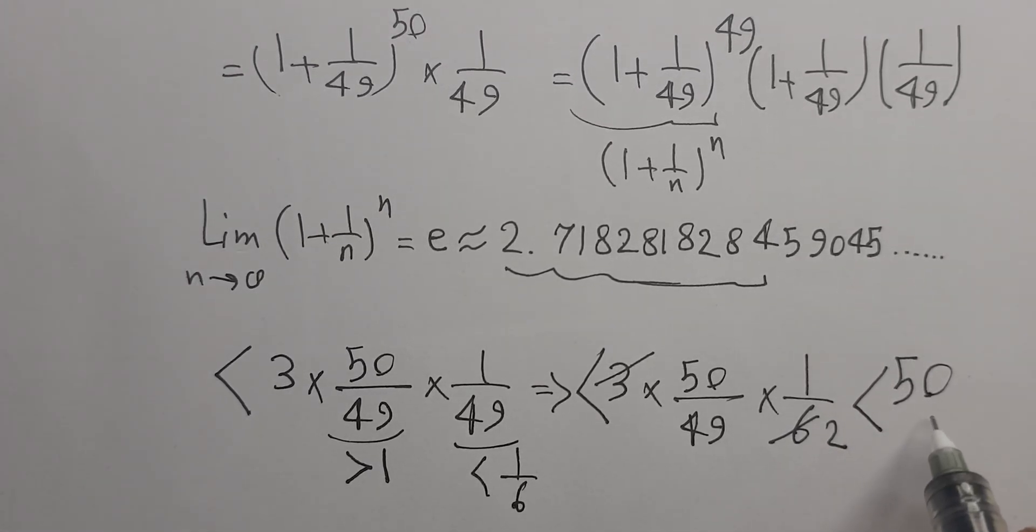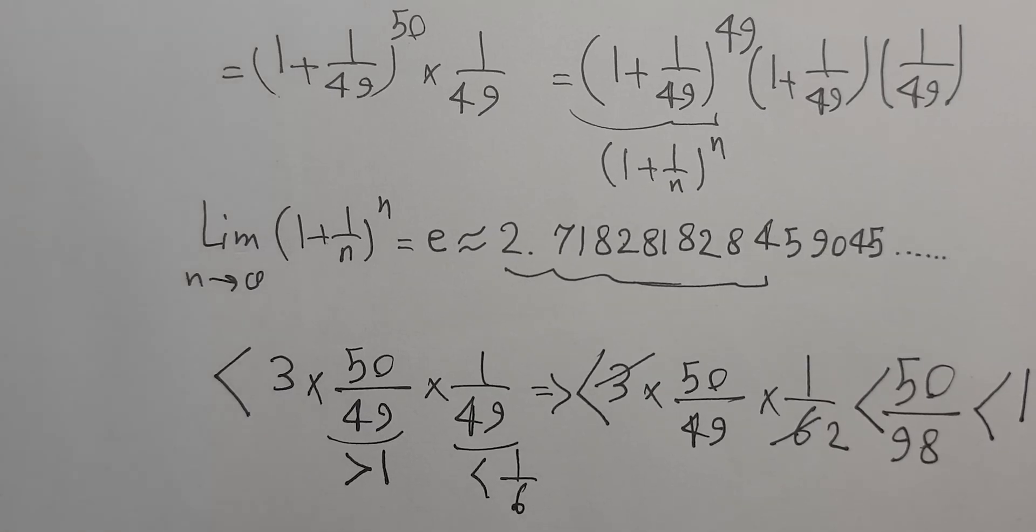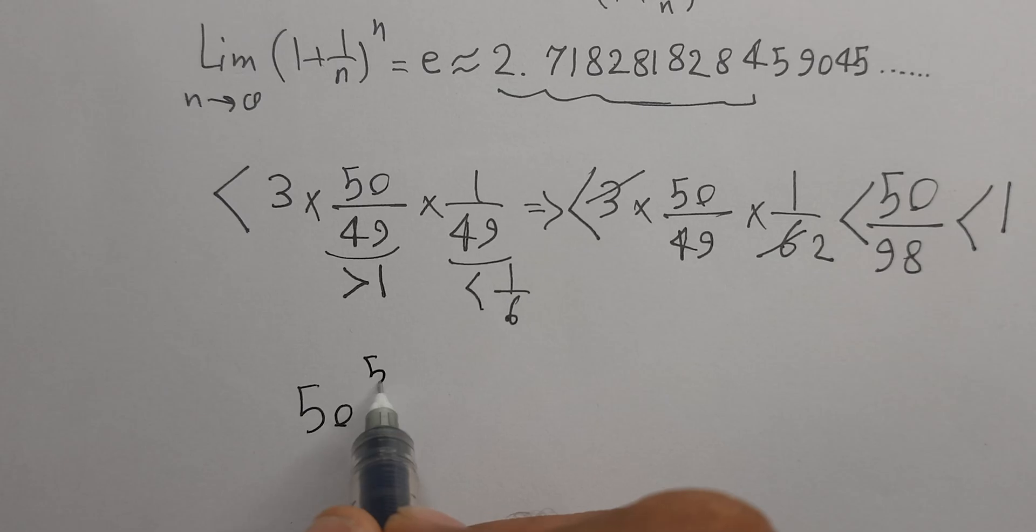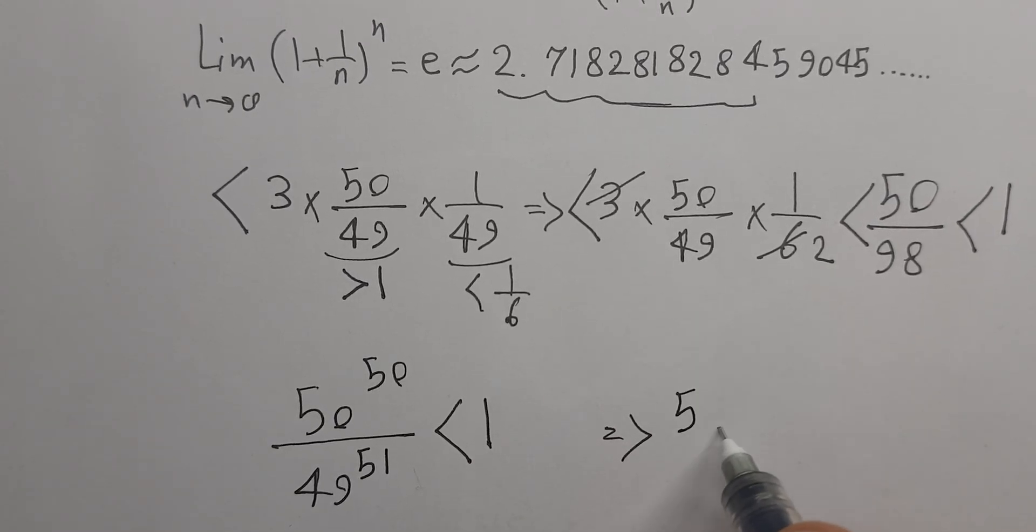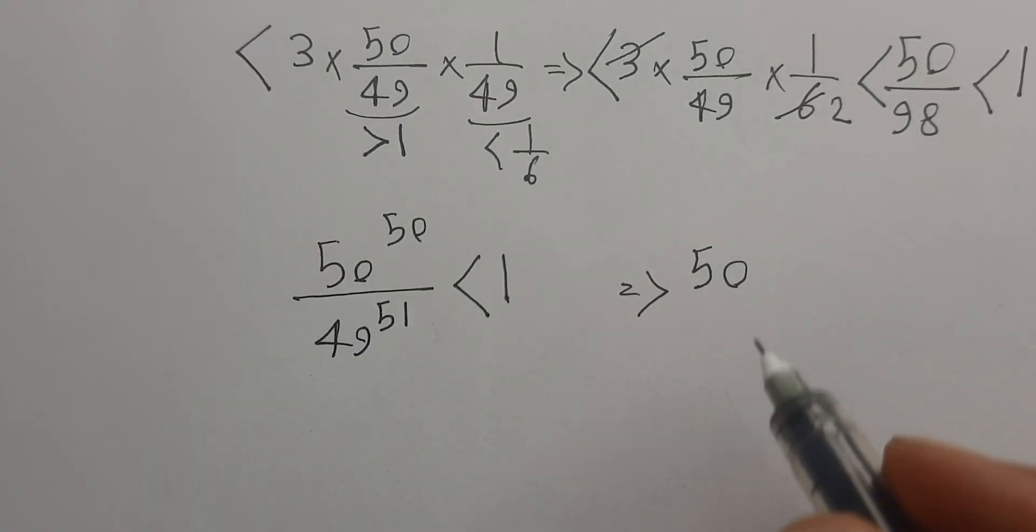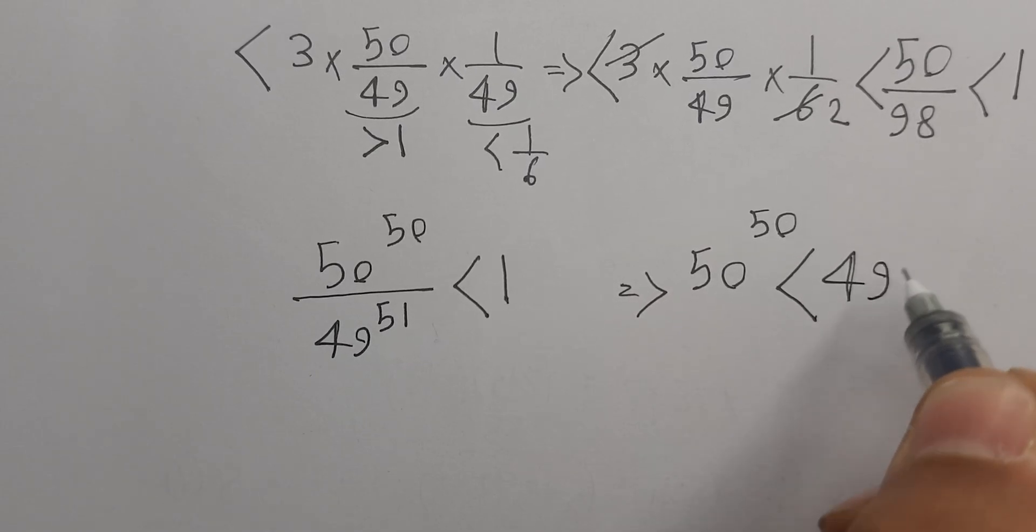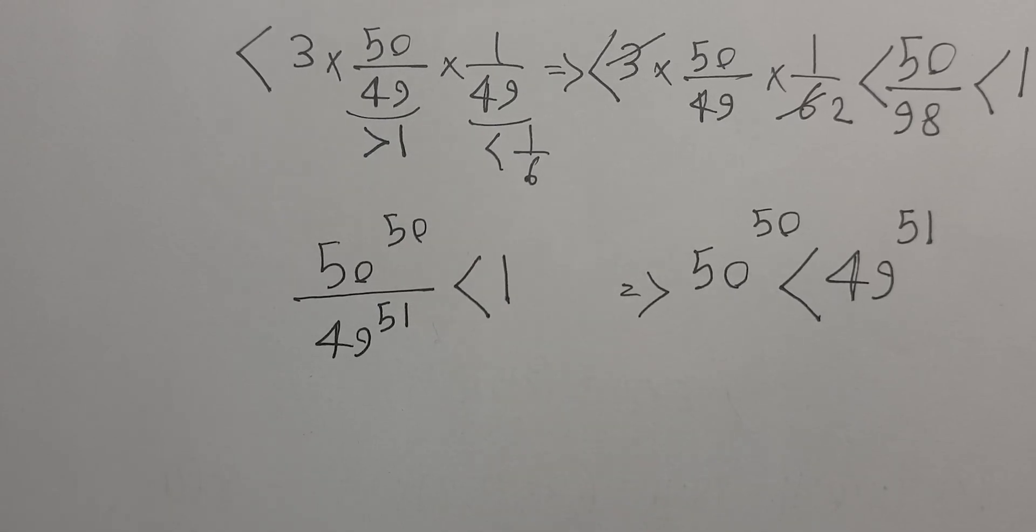This is smaller than 50 over 98, and this is smaller than 1. So our answer, 50 power 50 over 49 power 51, is smaller than 1. So 50 power 50 is smaller than 49 power 51.